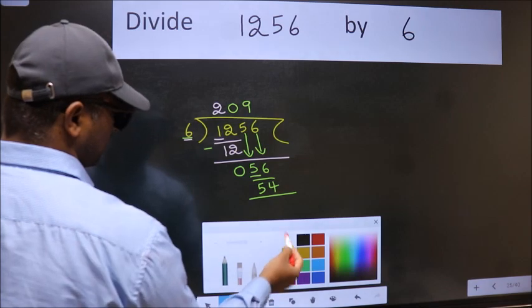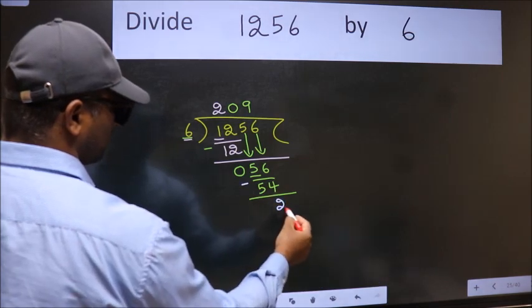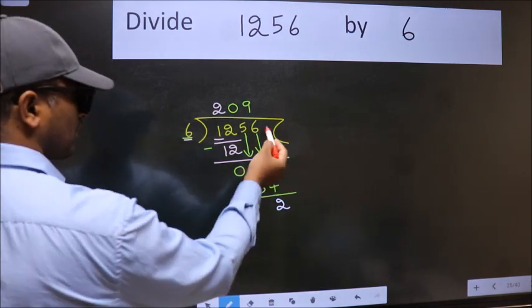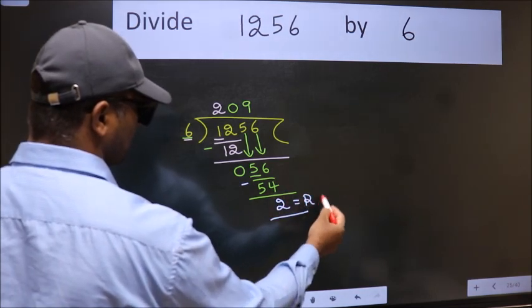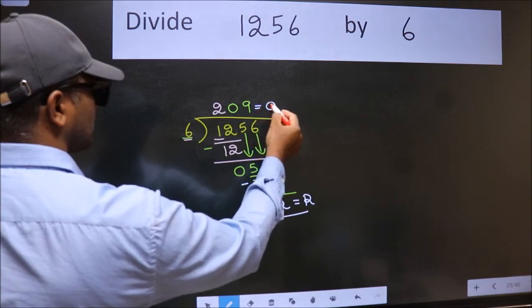Now we subtract. We get 2. No more numbers to bring it down. So we stop here. This is our remainder and this is our quotient.